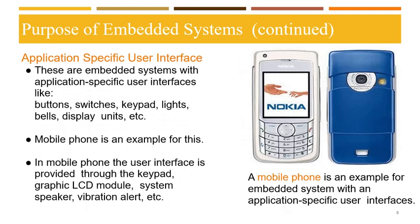Lastly, we have application-specific user interface. Embedded systems with application-specific user interfaces include components like buttons, switches, keypad, lights, bells, display units, etc. A mobile phone is an example of an embedded system with an application-specific user interface. In a mobile phone, the user interface is provided through the keypad, graphic LCD module, system speaker, vibration alert, etc.